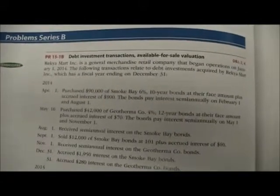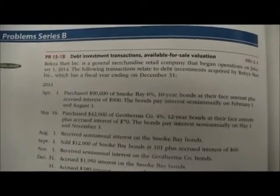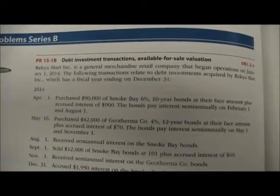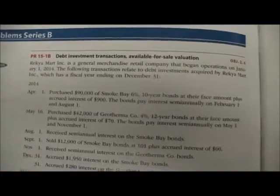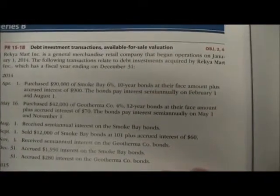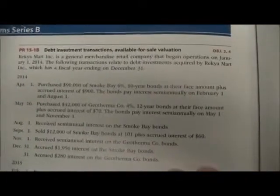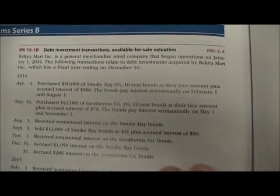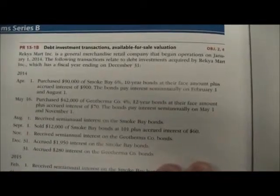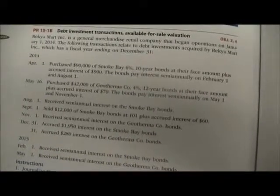For Chapter 15, we're going to work on a couple problems. The first one is 15-1B, and it talks about debt investment transactions and available for sale valuations. Recchia Mart, Inc. is a general merchandise retail company that began operations on January 1st, 2014. The following transactions relate to debt investments acquired by Recchia Mart, Inc., which has a fiscal year ending December 31st.